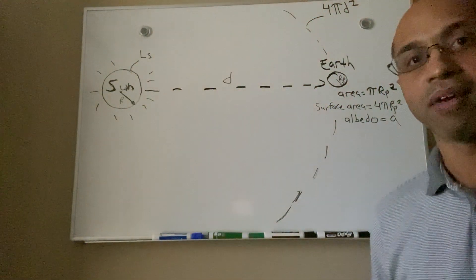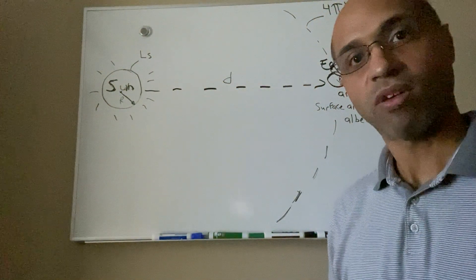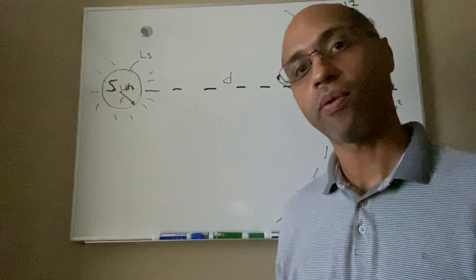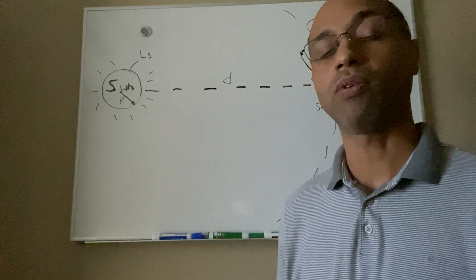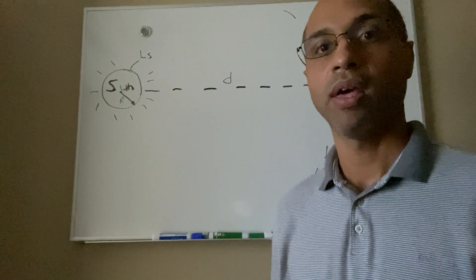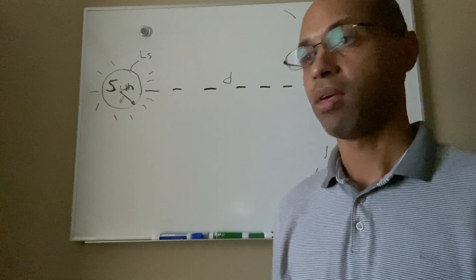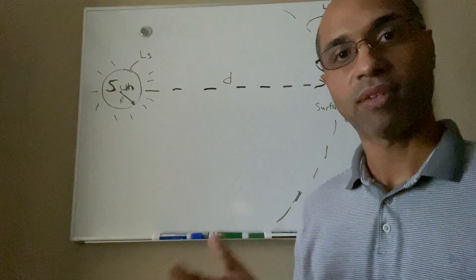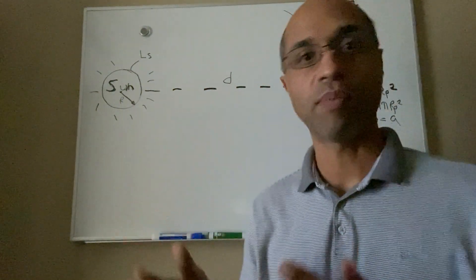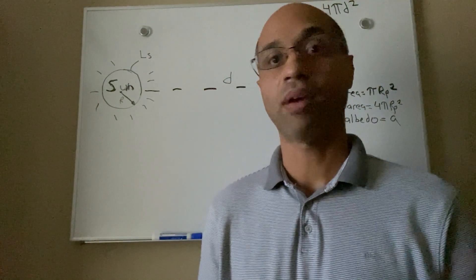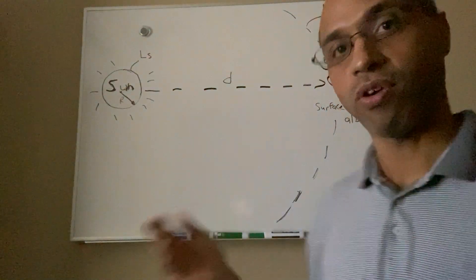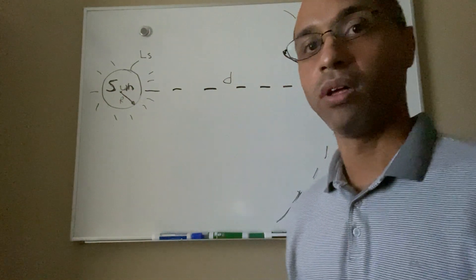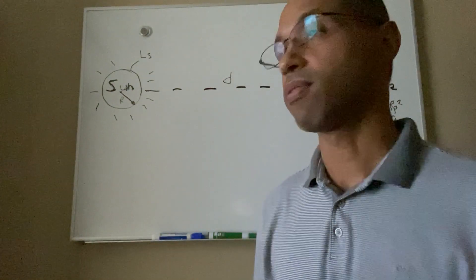Hello everyone and welcome to my class. We just discussed power and luminosity — how they are essentially units of power each with units of watts. Now we can take that knowledge from stellar luminosity and use it to begin calculating planetary temperatures. I'm going to show you an example of how to calculate the effective planetary temperature of the Earth, which orbits the sun.